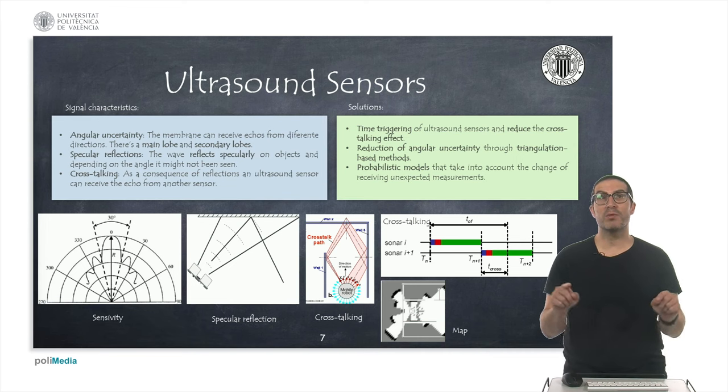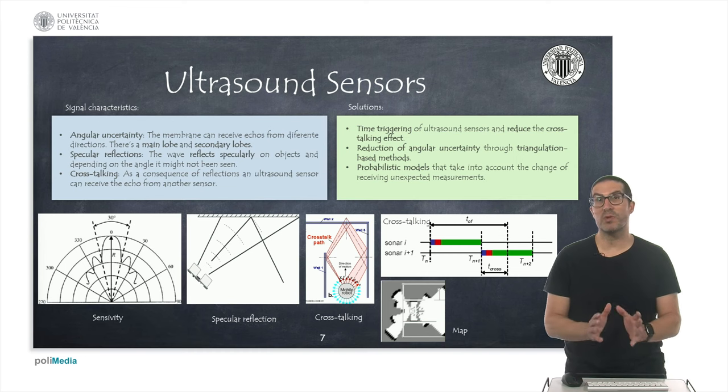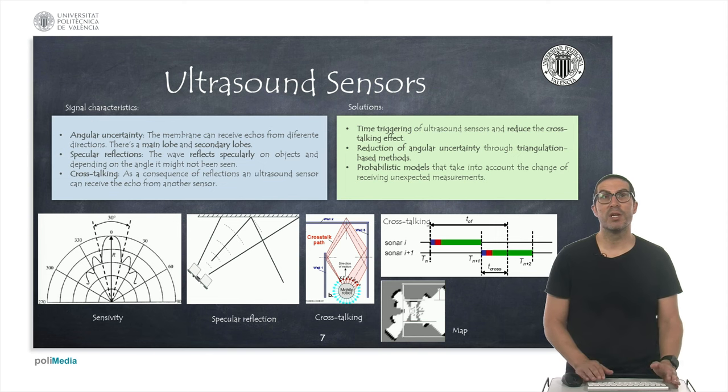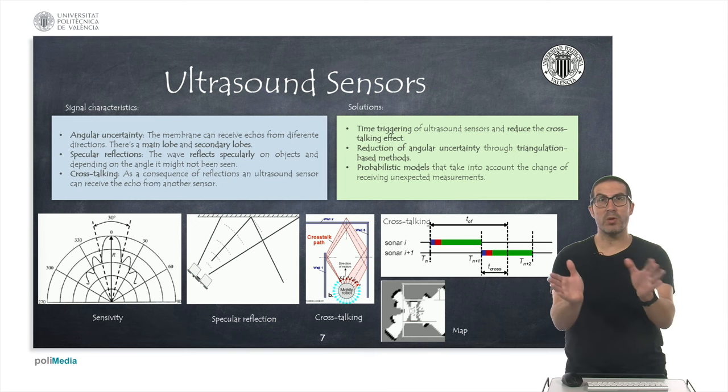But we might have secondary lobes in which the sensor can receive echoes also from the side angles. The width of the main lobe is usually large, and that's why we use it to detect the object at a certain distance but we don't know exactly with accuracy where the object is.